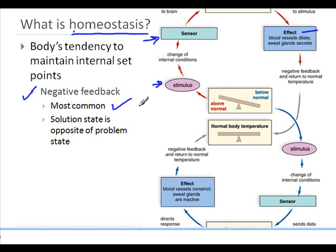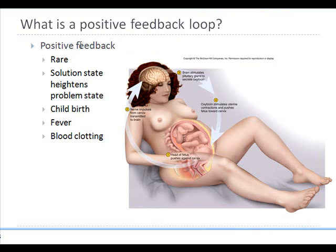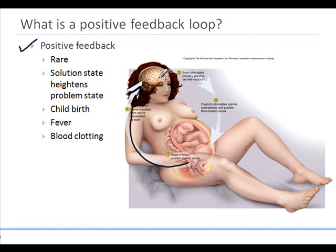Negative feedback provides a solution to different problems. On the other hand, we also have a homeostasis mechanism called positive feedback, which is less common. It is a mechanism that will bring an even greater change in the same direction. For example, when a woman is giving birth, the head of the baby begins to press against the cervix, which stimulates the sensory receptors, and these sensory receptors trigger the pituitary gland to release oxytocin. Oxytocin stimulates the contractions of the uterus and pushes the fetus towards the cervix. This is an example of positive feedback, in which the response heightens the original stimulus.